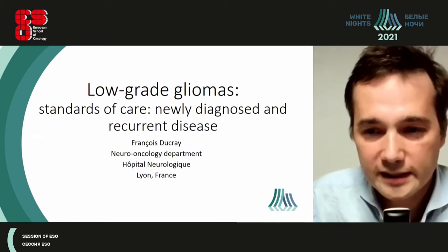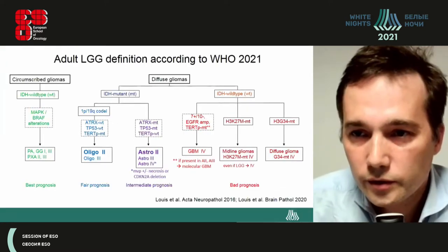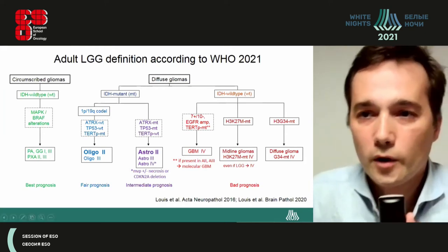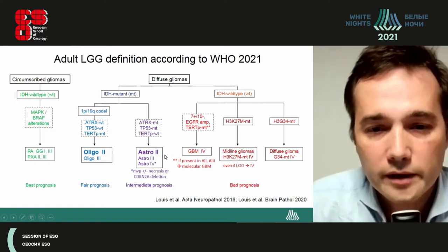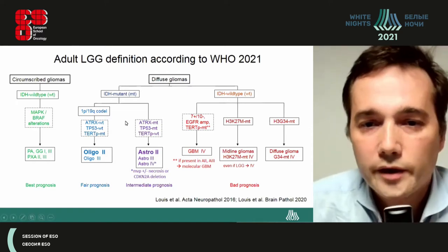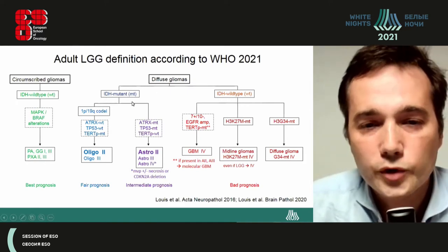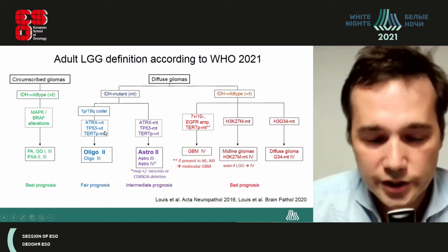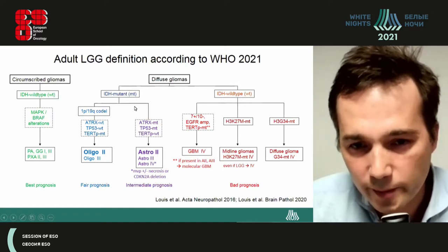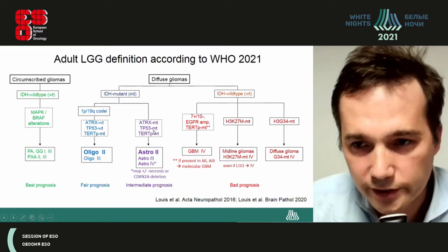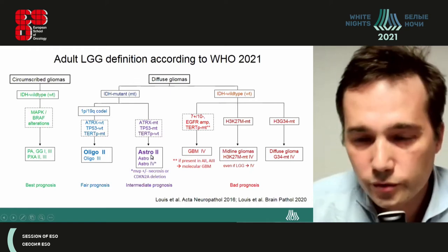So when we now in 2021 speak about low-grade gliomas, what are we speaking about? When we speak about low-grade diffuse gliomas, we are speaking about diffuse gliomas which are IDH mutant and have either 1p/19q codeletion — corresponding to low-grade oligodendrogliomas — or IDH mutant diffuse gliomas without the 1p/19q codeletion, which correspond to low-grade astrocytomas.